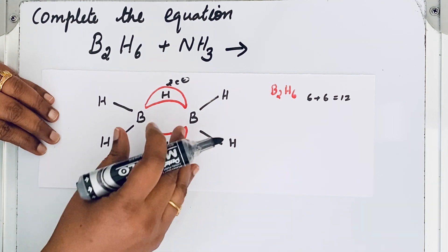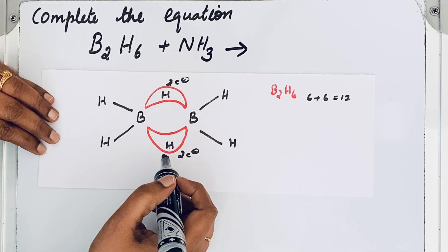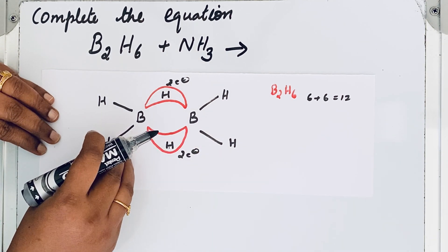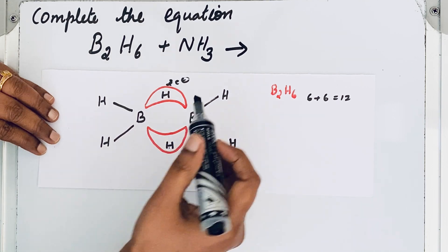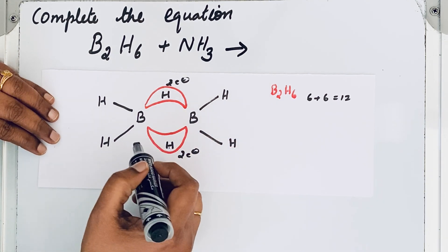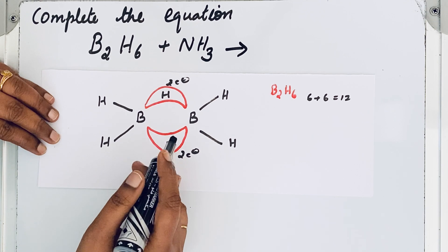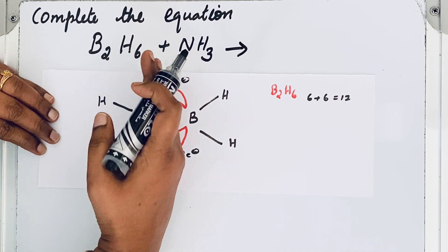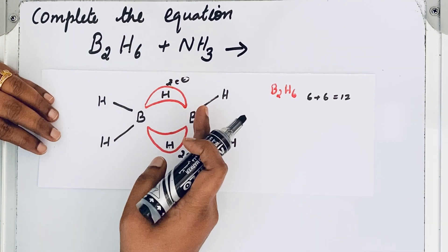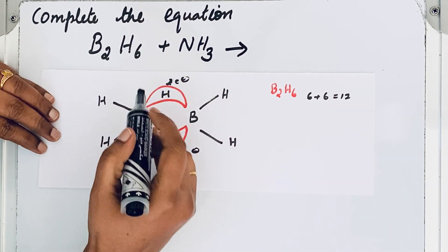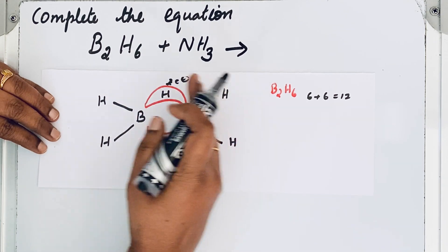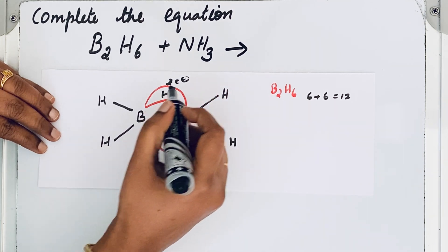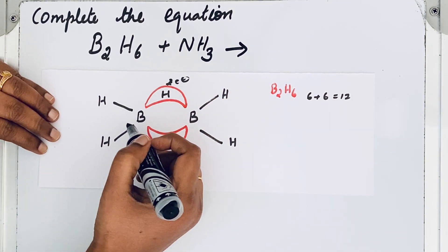Comparing the two: the bridge bond is weaker while the terminal bond is stronger. So when ammonia comes to react with diborane, this weaker bridge bond immediately breaks. When it breaks, the BH₄ fragment takes the electrons along with it, forming BH₄⁻. The ammonia then adds to the remaining part — let me show you.